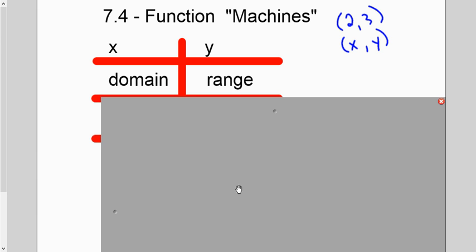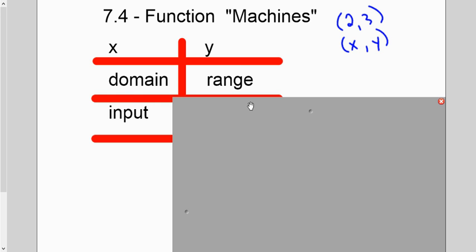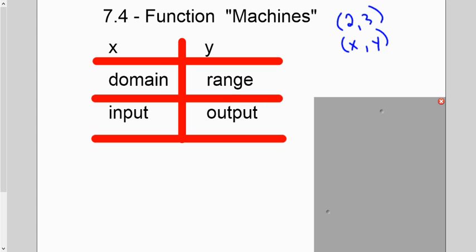Today I'm going to teach you two more nicknames. The X, or domain, can also be known as input, and the Y, and range, can be known as output.